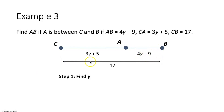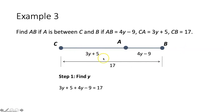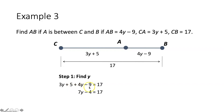Using betweenness of points, the measure of segment CA plus the measure of segment AB equals the measure of CB — because the two parts added together equal the whole. So: (3y + 5) + (4y − 9) = 17. Combining like terms: 7y − 4 = 17. Adding 4 to both sides gives 7y = 21, then dividing by 7 gives y = 3.